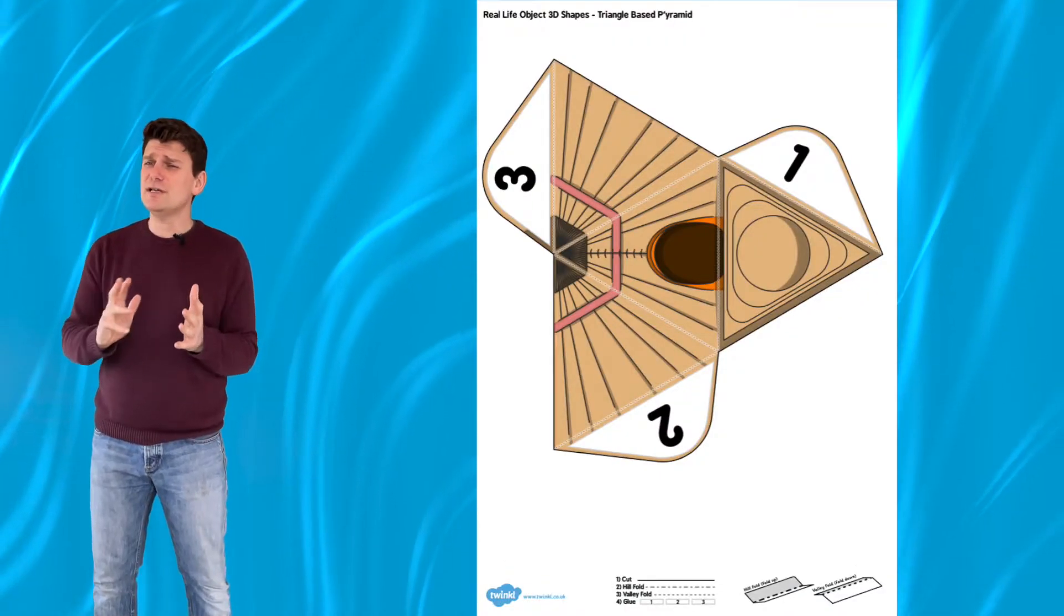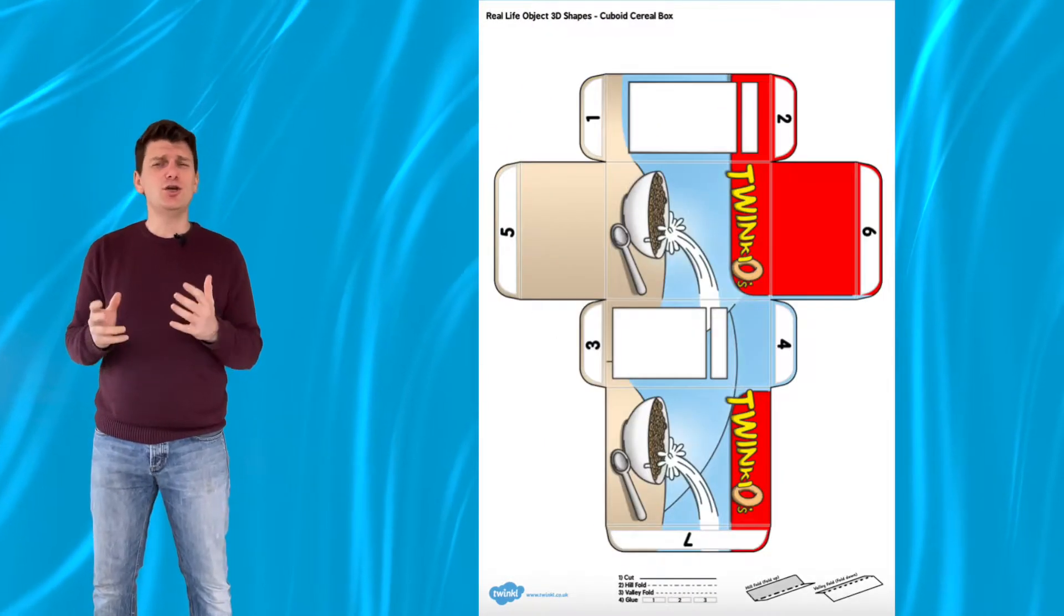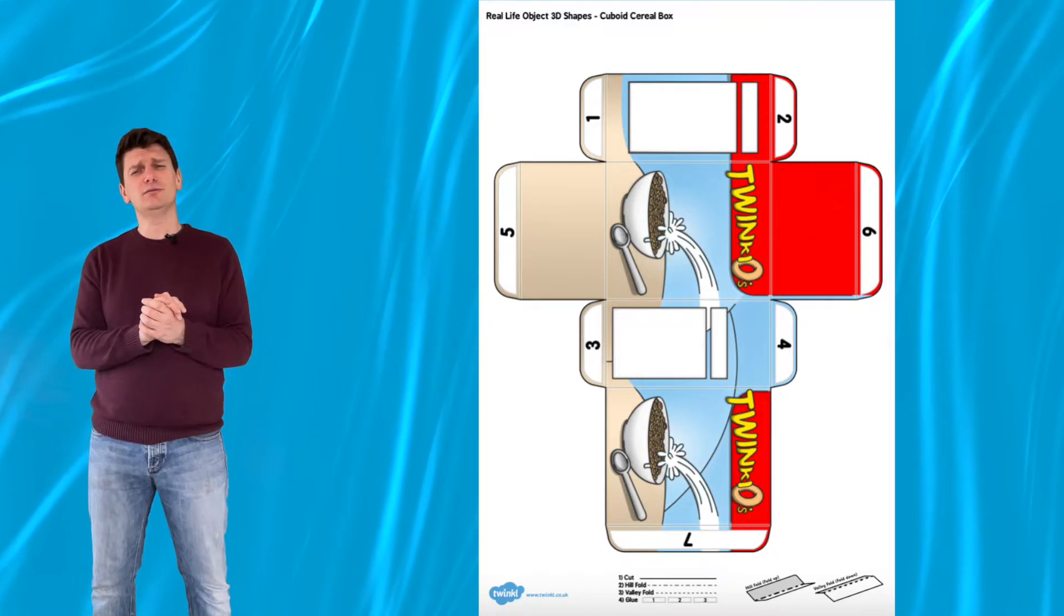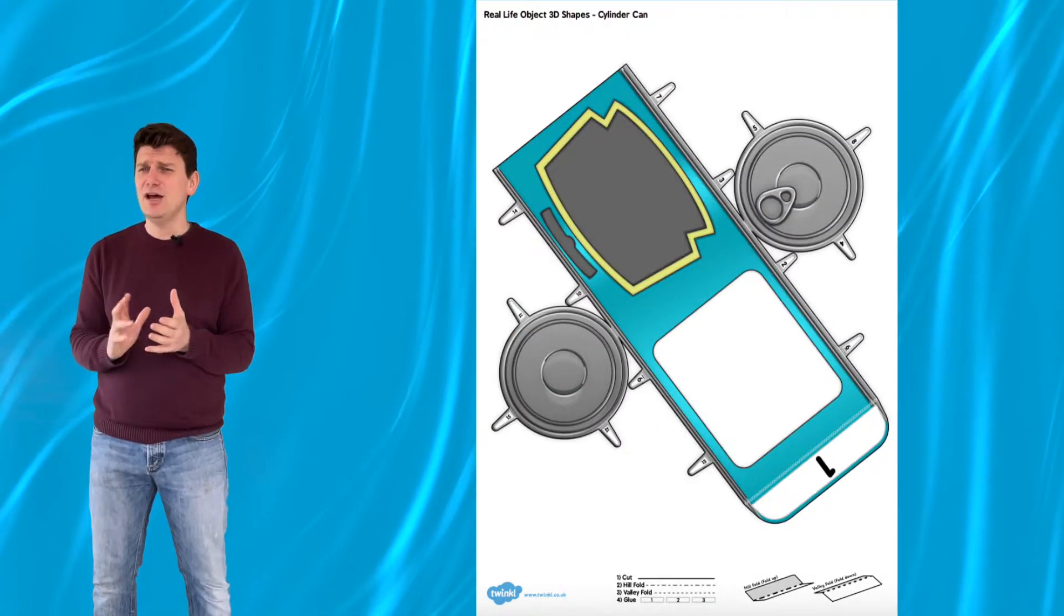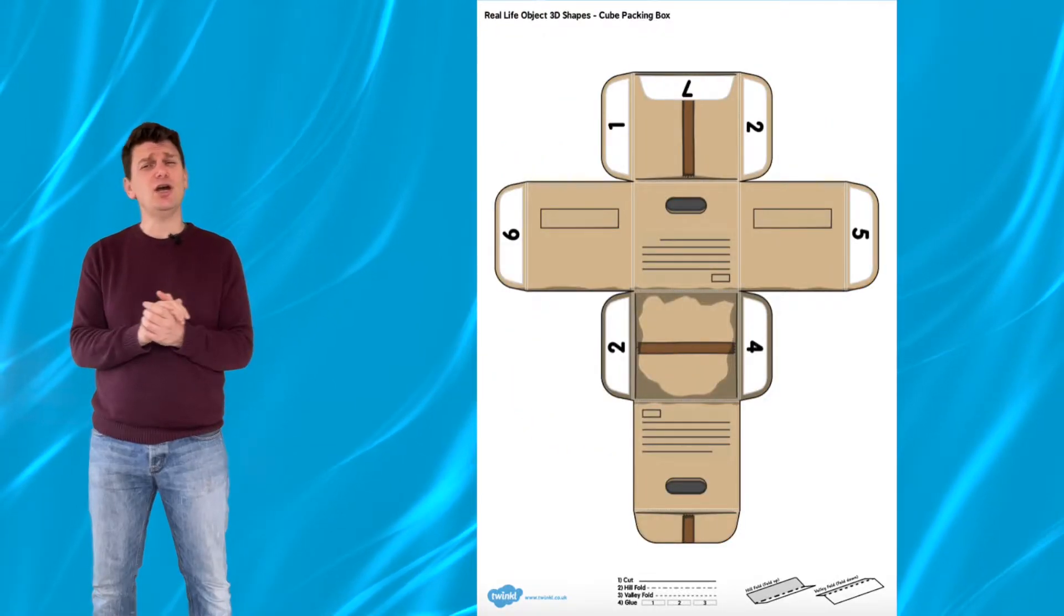This resource includes 3D cut out pictures for a triangle based pyramid, square based pyramid, a cuboid in the form of a cereal box, a cylinder in the shape of a can, a triangular prism in the form of a tent, a cube in the form of a packing box and even a cone.